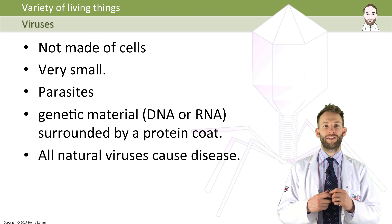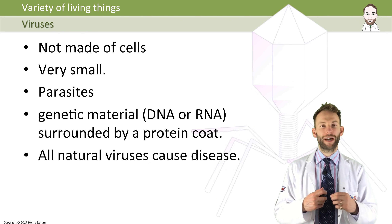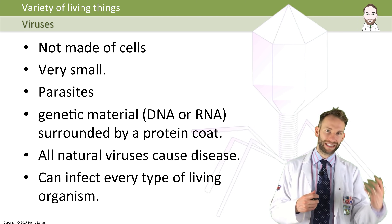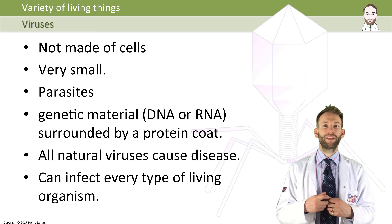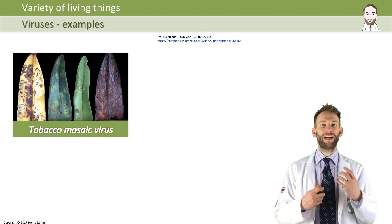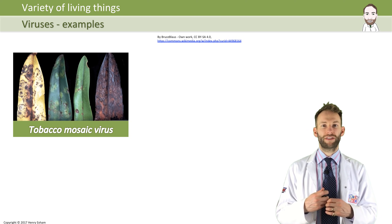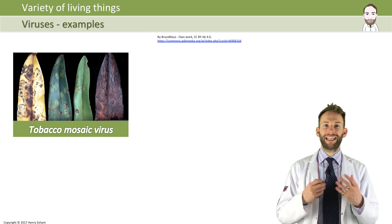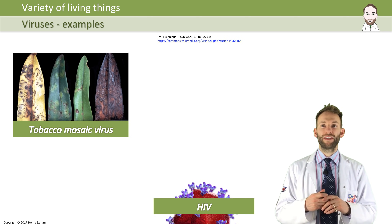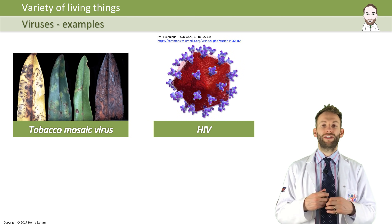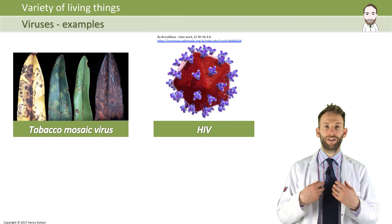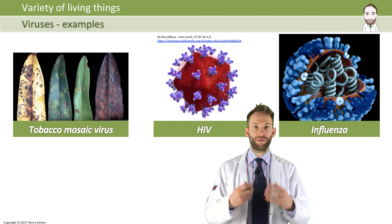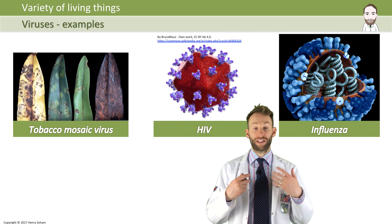All natural viruses cause disease, and they can infect every type of living organism — not just humans. Plants get infected by viruses, and bacteria get infected by viruses. The tobacco mosaic virus infects plants and prevents the formation of chloroplasts, leaving patches all over the plant, which is how it gets its name. The HIV virus infects humans, destroys the immune system, and ends up causing AIDS. And influenza, which you will all have heard about, is the flu virus.